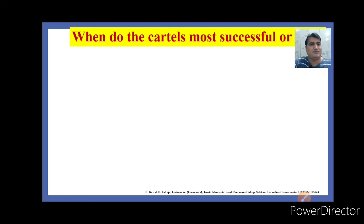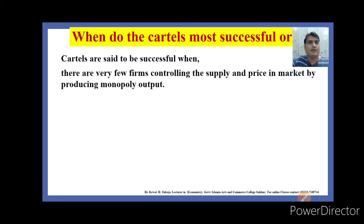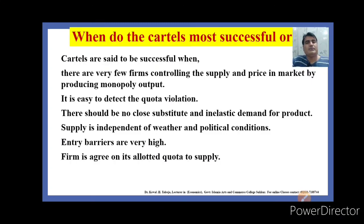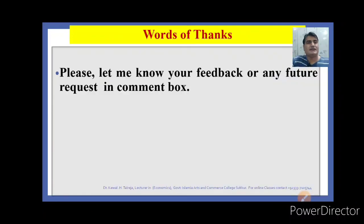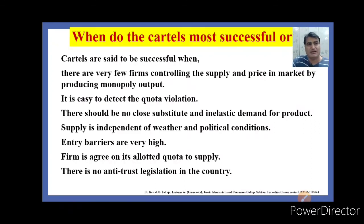When do cartels become most successful or fail? What are the factors on which cartels may be successful or fail? Cartels are said to be successful when there are very few firms controlling the supply and price in the market by producing monopoly output. It is easy to detect quota violations. There should be no close substitutes and inelastic demand for product. Supply is independent of weather and political conditions. Entry barriers are very high. Firms agree on their allocated quota to supply. There is no anti-trust legislation in the country. Under these conditions, the cartel can be successful. Otherwise, if the reverse of these things, the cartel becomes failed.